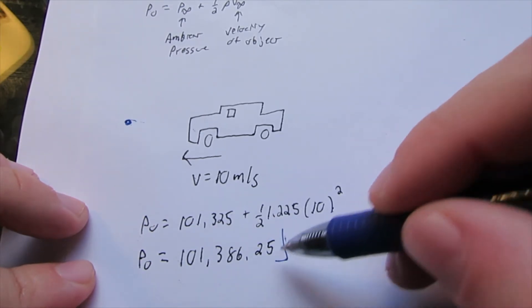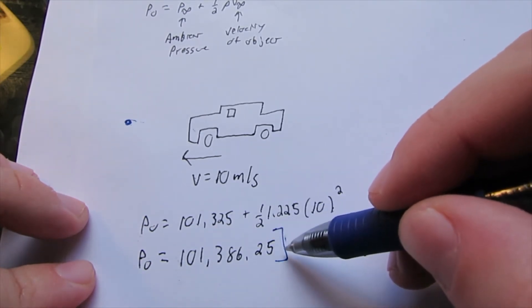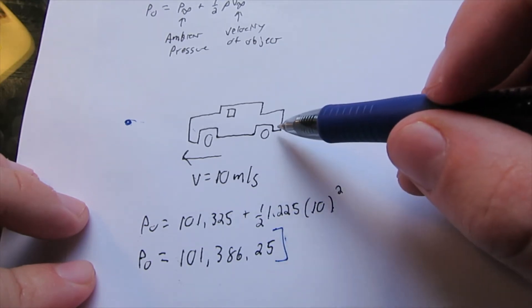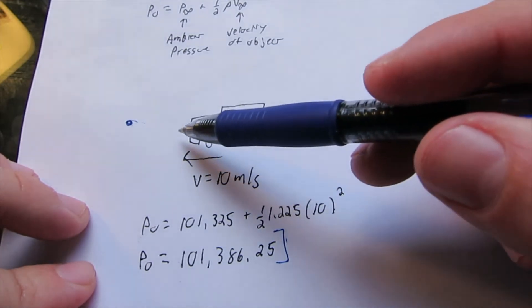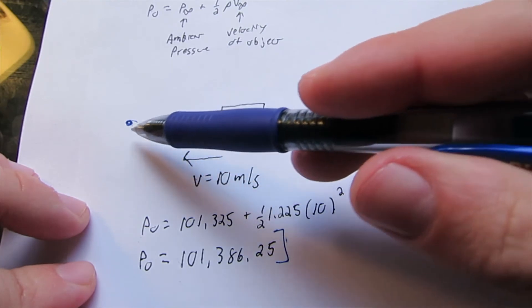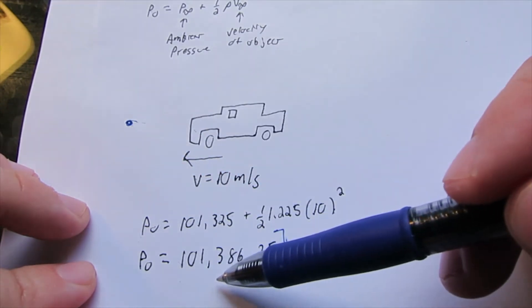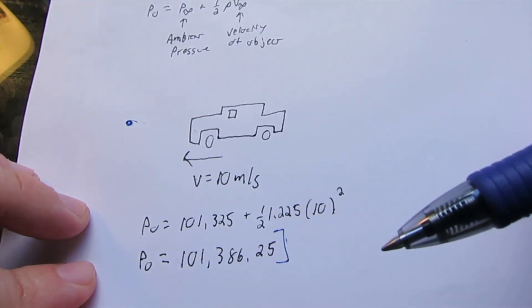For this car, the maximum pressure it will experience going 10 meters per second through still air is 101,386 pascals.